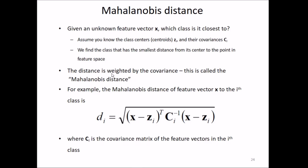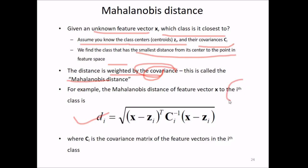Now we come to Mahalanobis distance. Given an unknown feature vector x, which class is it closest to? We assume the class centroids and their covariances. We find the class that has the smallest distance from its center to the point in feature space. The distances are weighted by the covariance - this is called the Mahalanobis distance, not just the Euclidean distance. The Mahalanobis distance of feature vector x from the ith class is given by this formula, where Ci is the covariance matrix of the feature vectors in the ith class.